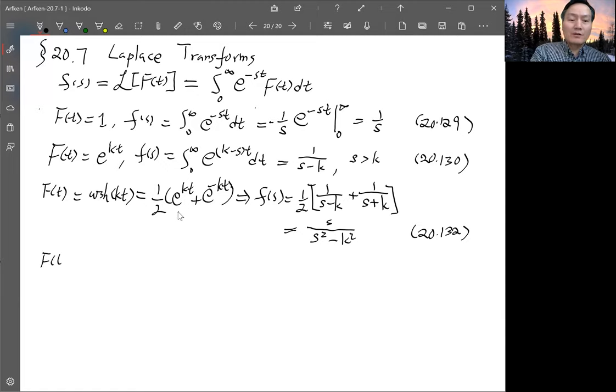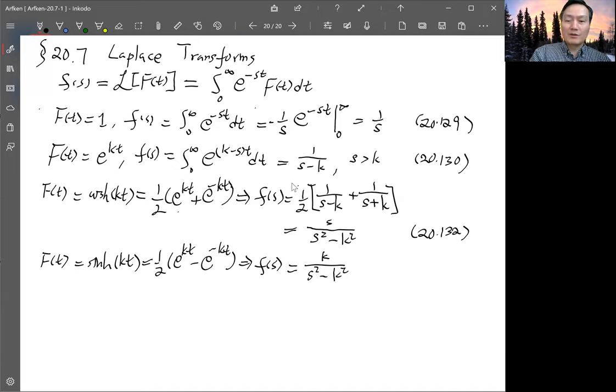And likewise, if f is sinh(kt), which is one half (e^(kt) - e^(-kt)), so F(s) will be the same thing except now this term is minus. So when you combine, you get k/(s^2 - k^2). This is equation 20.133.